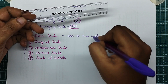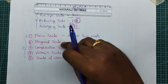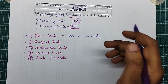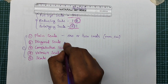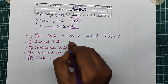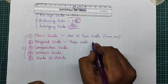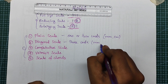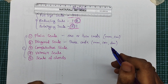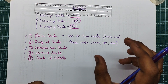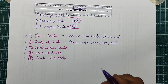In general, in Plane Scale we have 2 units: centimeters and millimeters. Diagonal Scale will have 3 units — for example, millimeters, centimeters, and decimeters. There are 3 units in Diagonal Scale.